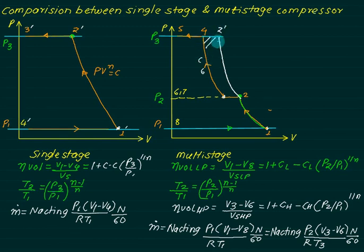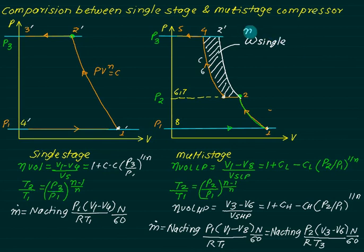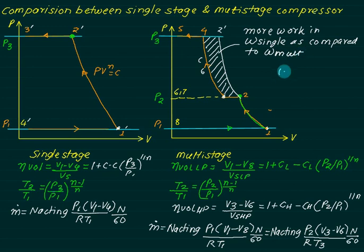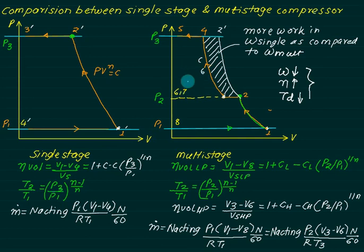So there are three advantages of multi-stage over single-stage compression: work done is reduced, volumetric efficiency is increased, and delivery temperature is decreased. Because work is reduced, there is more uniform torque and less fluctuation of energy. Additionally, in single-stage compression the entire cylinder must be designed for the full pressure ratio P3/P1, whereas multi-stage avoids this.